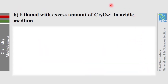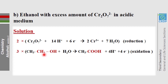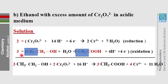Part B: ethanol with excess Cr₂O₇²⁻. The primary alcohol becomes carboxylic acid. Hide the R group and balance the half-reactions. The overall equation follows from multiplying and combining the half-reactions.